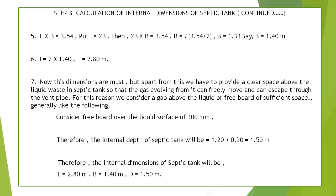Apart from the liquid dimensions, we must provide a clear space above the liquid waste so that gas evolving from it can freely move and escape through the vent pipe. For this reason we consider a freeboard above the liquid surface of 300 millimeters. Therefore the internal depth of the septic tank = 1.20 + 0.30 = 1.50 meters. The final internal dimensions are: Length = 2.80 m, Breadth = 1.40 m, Depth = 1.50 m.